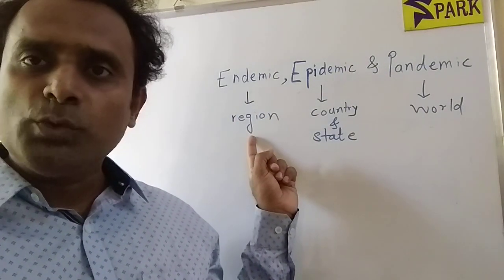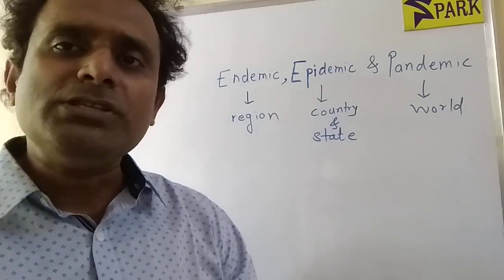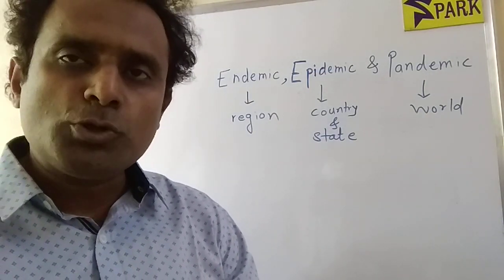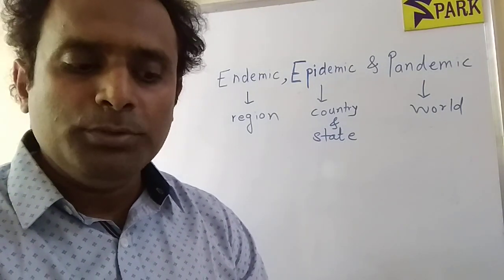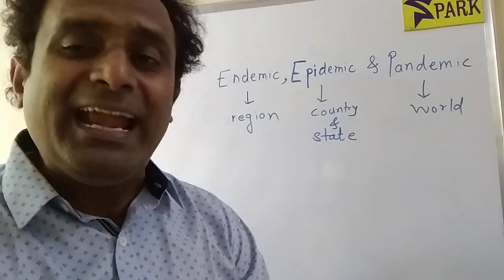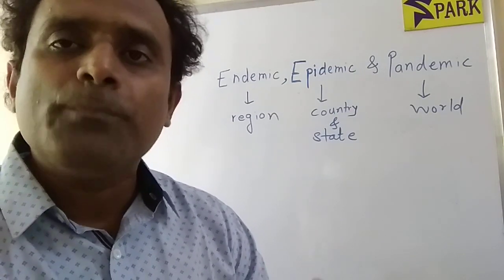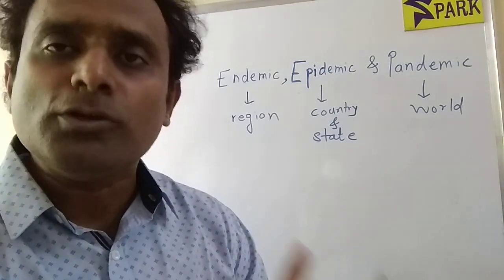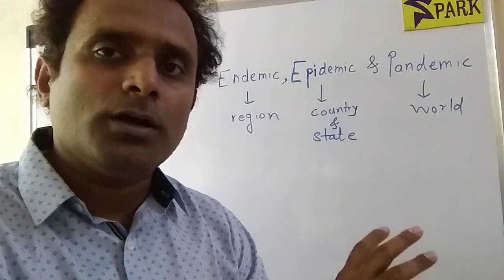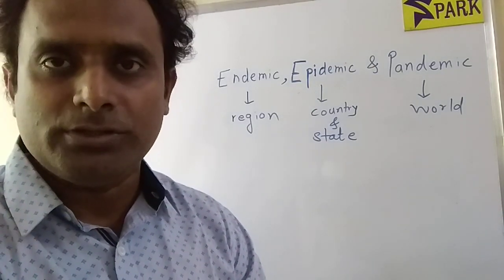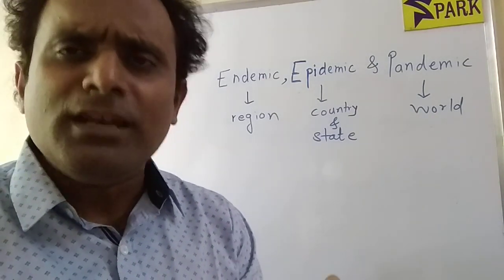Now let us look at the first word: endemic. A disease is endemic when it is restricted to a particular region. For example, a disease that is endemic among sheep and cattle in the tropics — here I am referring to a particular small region. So it has affected the sheep or cattle in that particular region. Endemic is a disease which affects a fairly small number of people in a particular region.